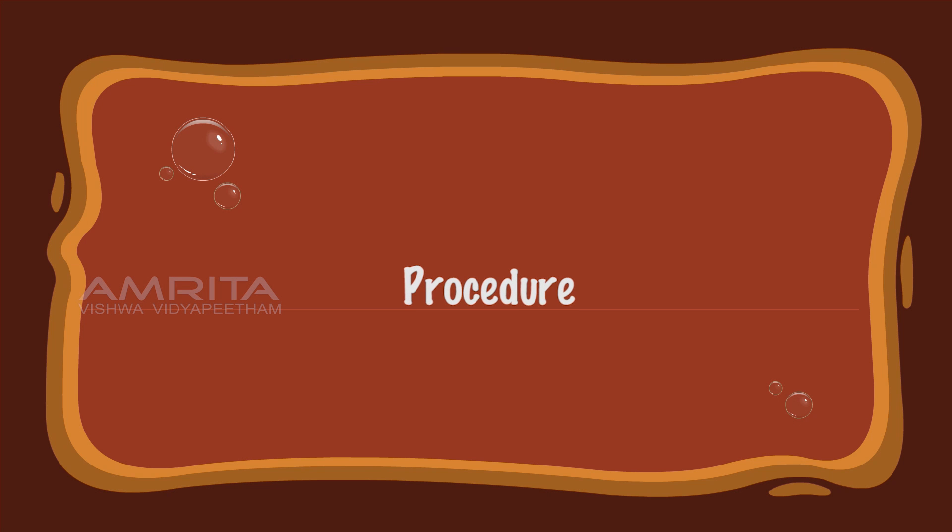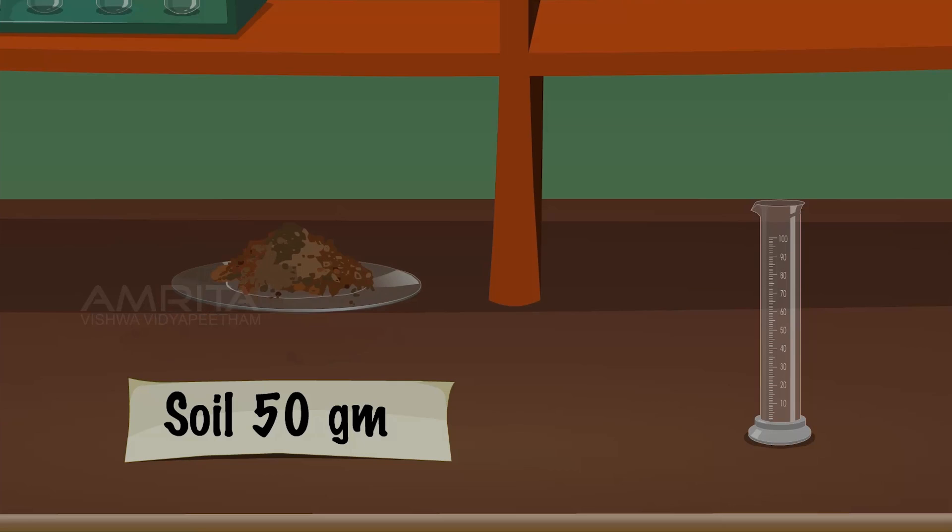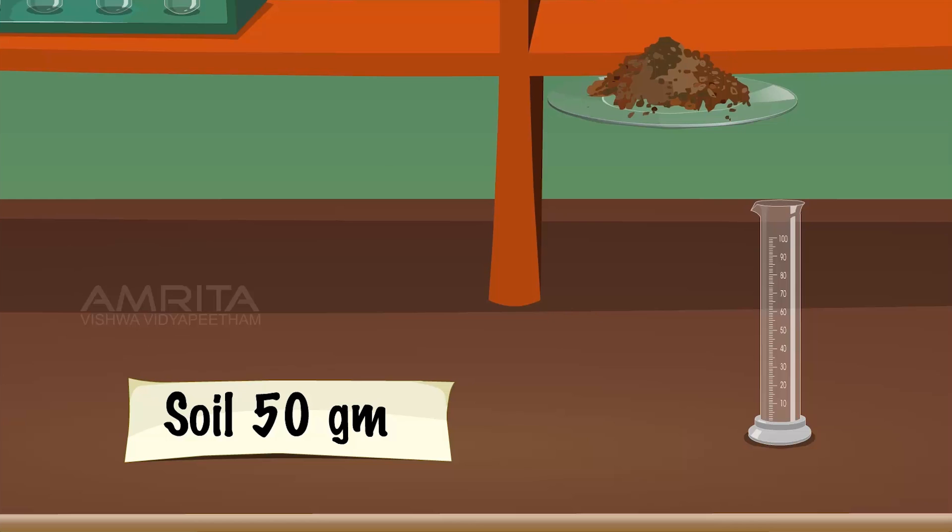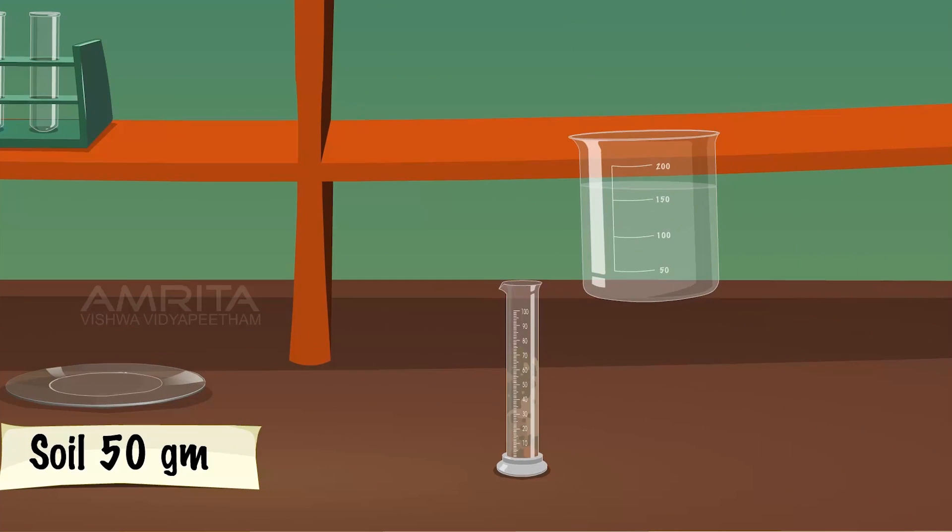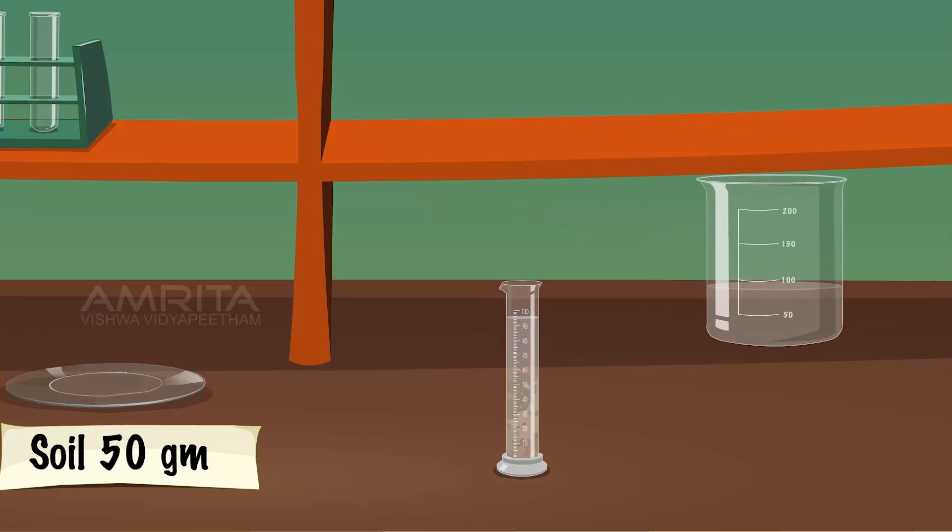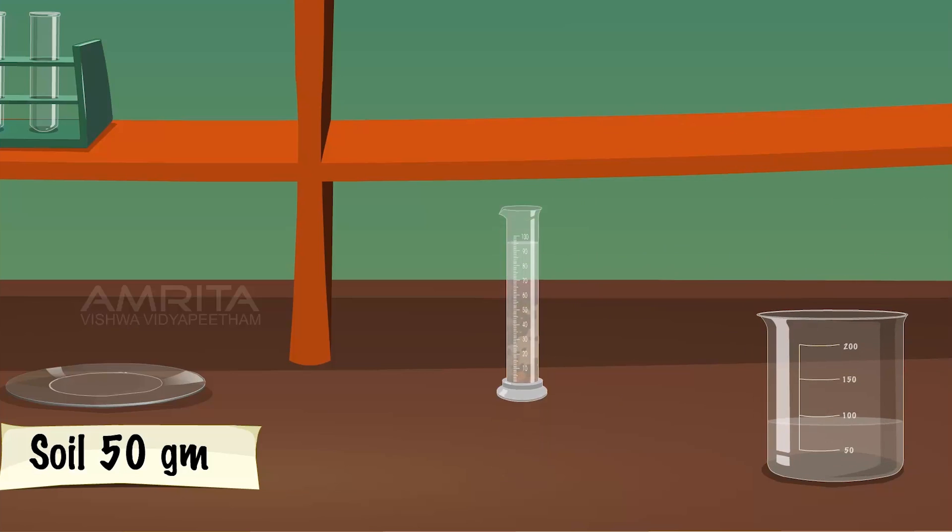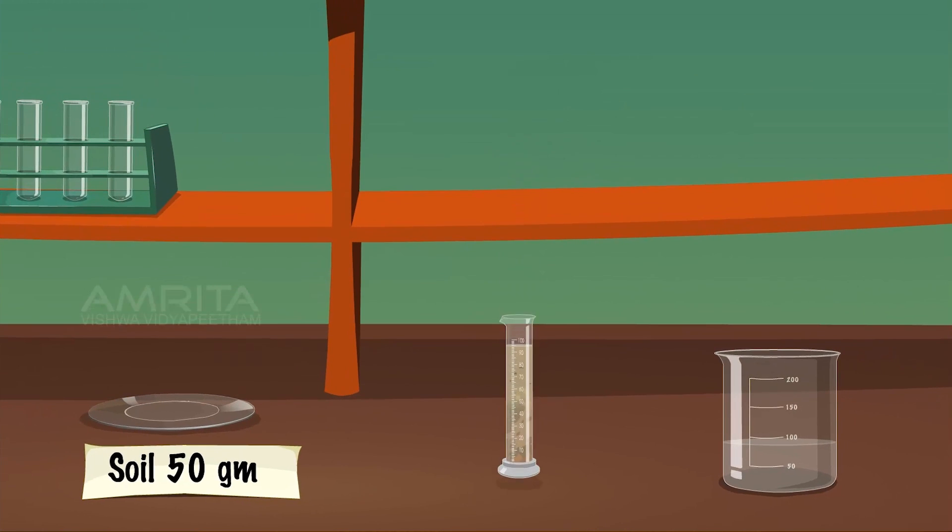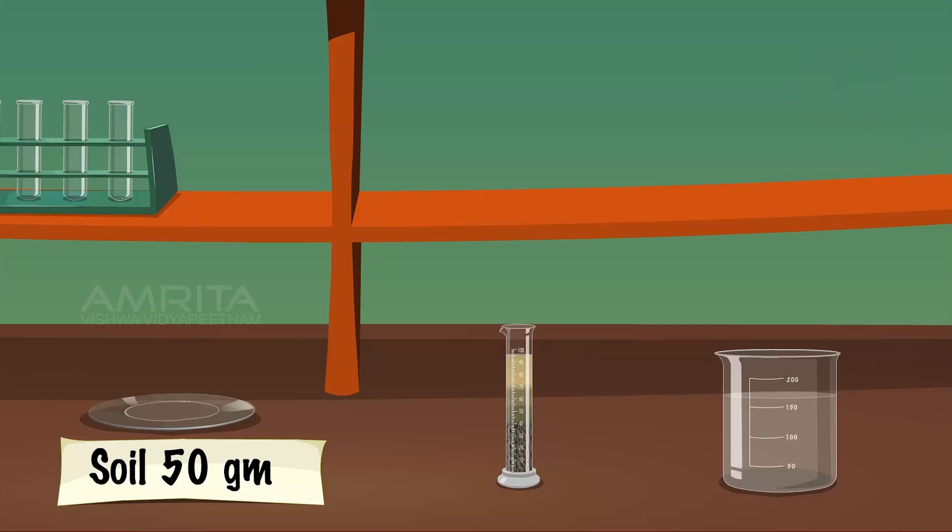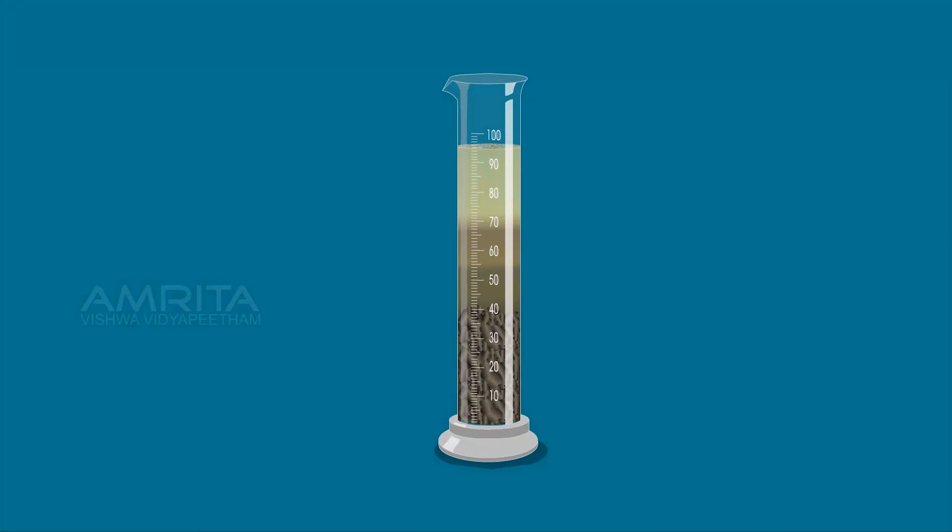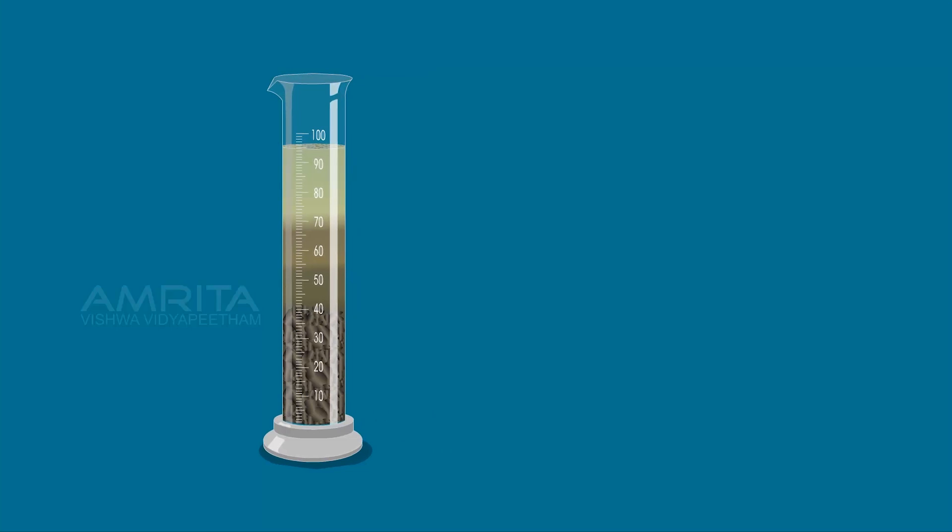Procedure: Take 50g soil sample and put it into a measuring cylinder. Take beaker containing water and pour some water into the measuring cylinder. Shake the measuring cylinder to mix the sample. Allow the soil particles to settle down. Record the thickness of the layers formed by different types of particles in the measuring cylinder.